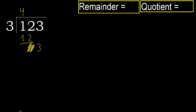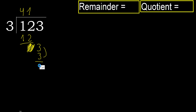Eliminate 0 on this side. Bring down 3. 3 multiplied by 1 is 3, which is not greater. 3 minus 3 is 0. Next.